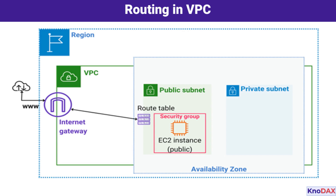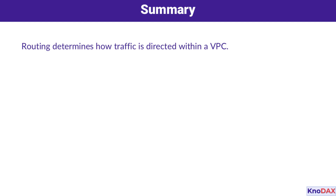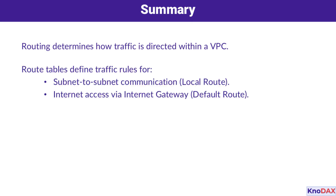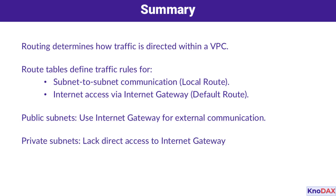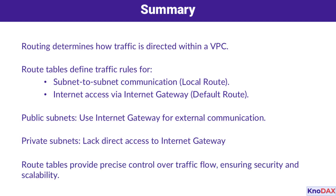With this understanding, you're better equipped to manage your AWS networking with confidence. To wrap up, let's recap the key points about routing in a VPC. Route tables are central to directing traffic within and beyond the VPC. The local route handles communication between subnets, while the default route enables Internet access via an Internet Gateway. Public subnets are designed for external-facing resources, while private subnets offer restricted Internet access, typically facilitated by NAT Gateway. Route tables provide precise control over traffic flow, ensuring security and scalability. By carefully configuring route tables and gateways, you can ensure secure, efficient, and scalable network communication.